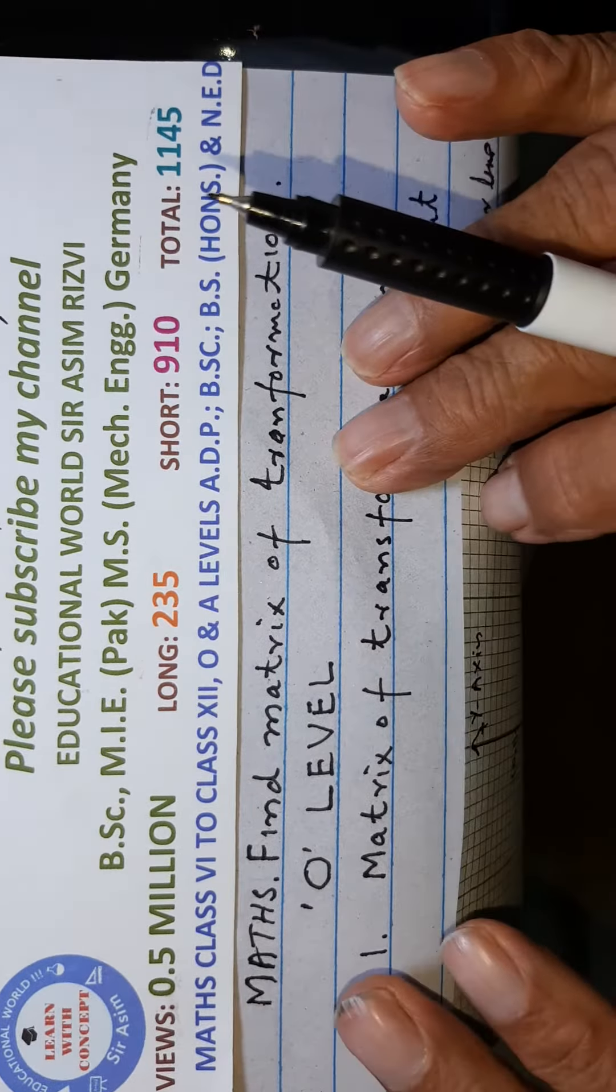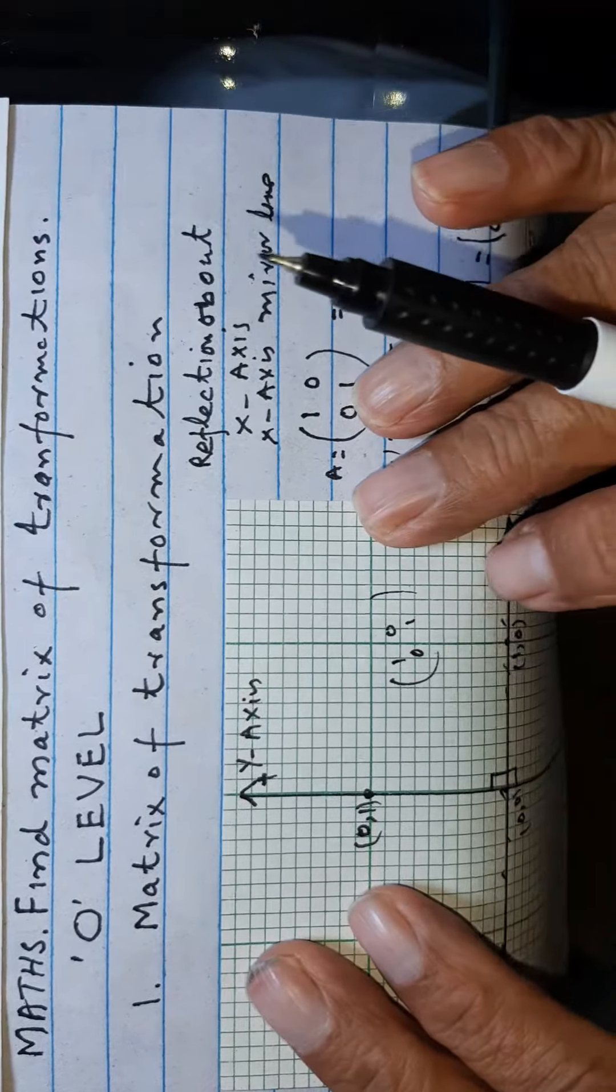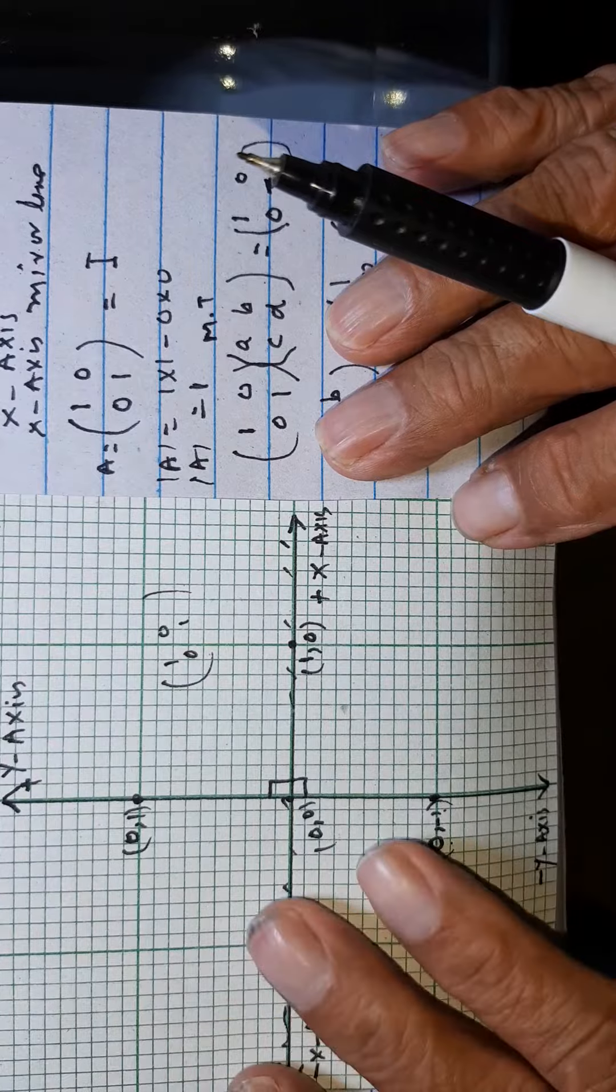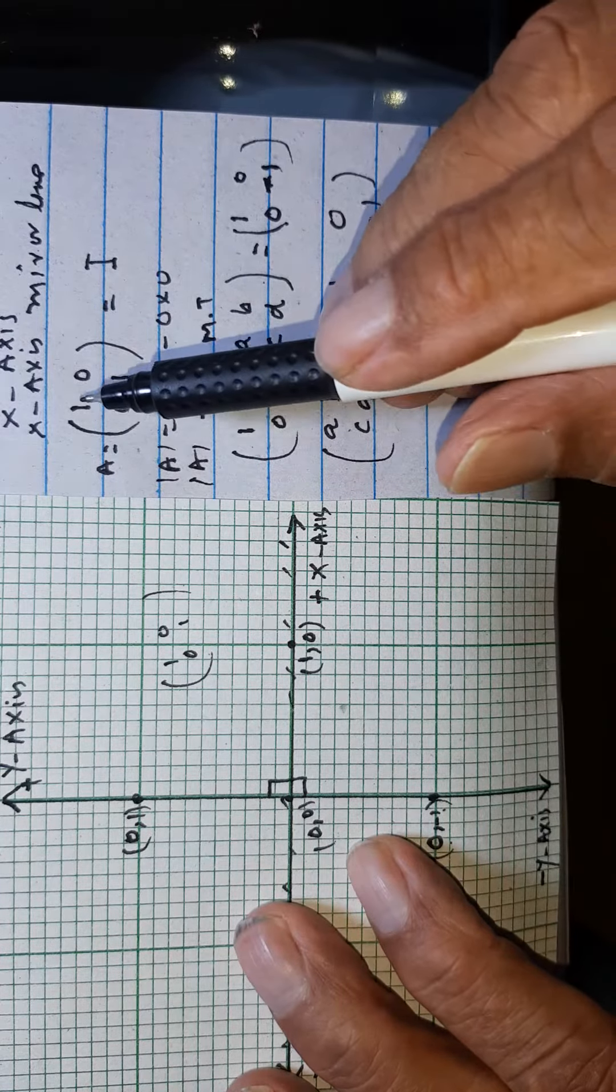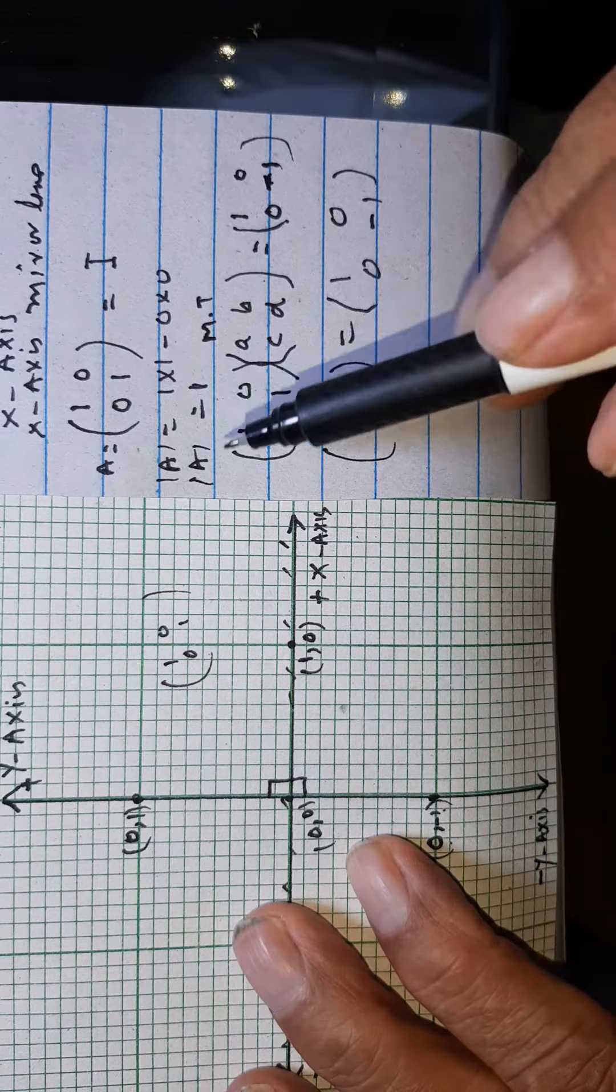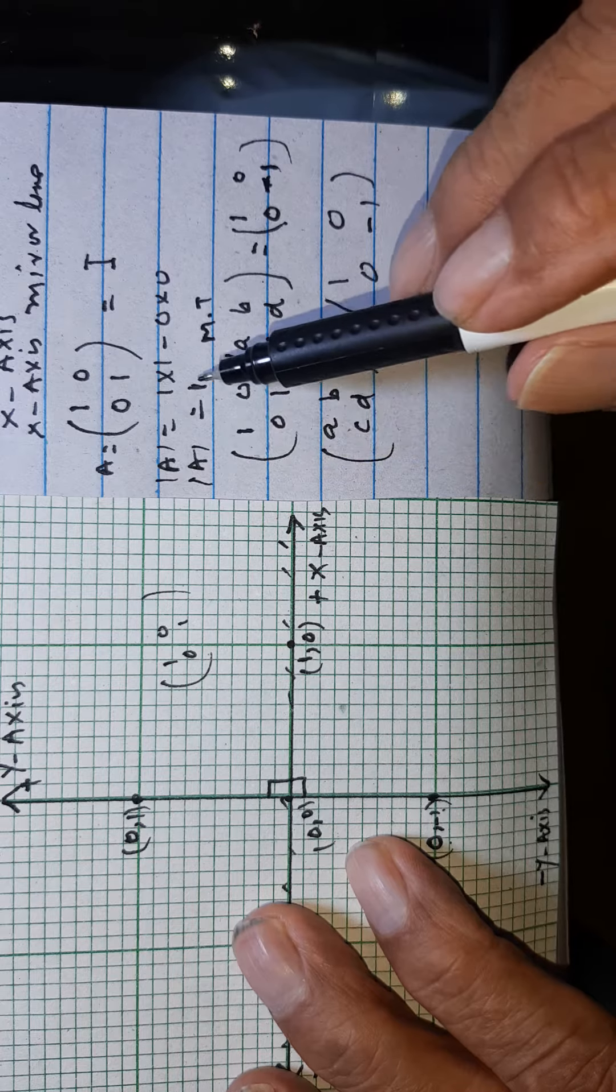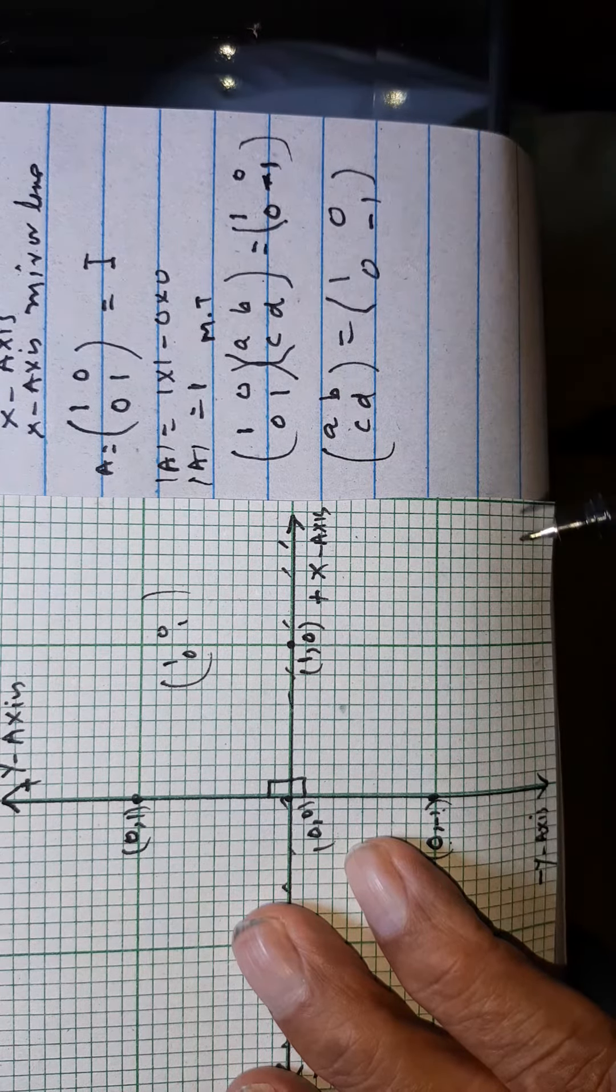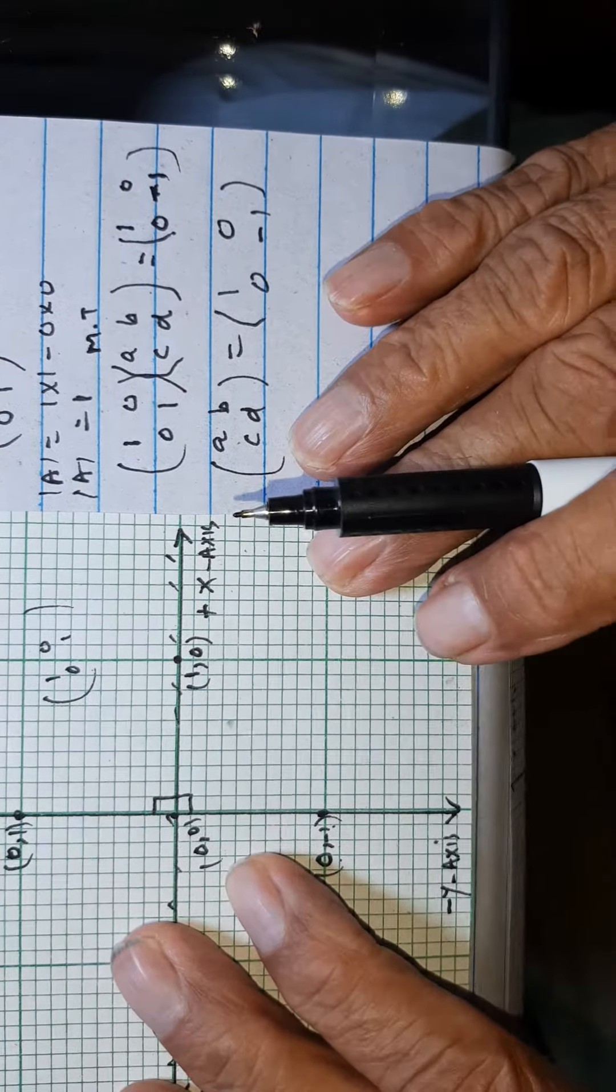Today we have to find out the matrix of transformation about the x-axis. Here this is matrix 1 0 and 0 1, and the determinant will be equal to 1. This is the identity matrix or unit matrix. Now we have to find out the matrix of transformation about the x-axis.